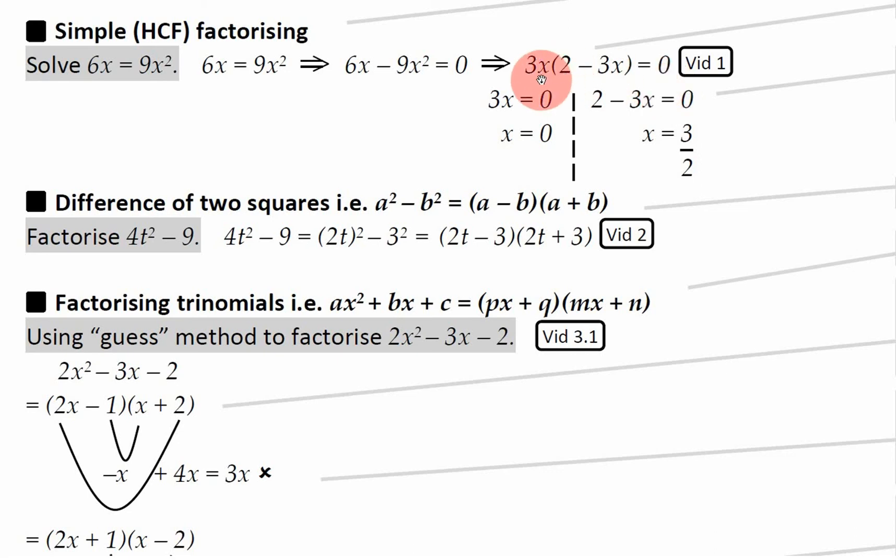So basically in this situation we've got two things that times to make 0. We've got the 3x times the 2 minus 3x and that equals 0. That means one of these has got to be equal to 0. So either 3x is equal to 0 or 2 minus 3x is equal to 0. And in maths we say both of them are equal to 0 depending on what x is.